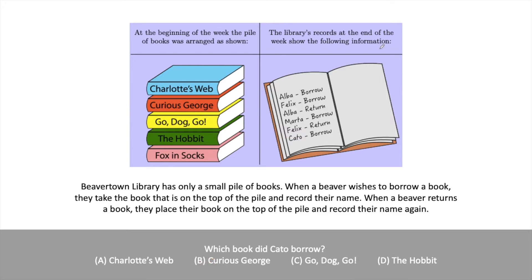There is a much faster way to solve this problem. If we go from the bottom to the top, we see that Cato was the last one to borrow a book. Cato borrows the book at the top of the stack — whichever was last returned. Felix just returned a book right before Cato borrows, so we don't care about what Alba and Marta did. We only care about what Felix did, because Felix has the book we care about. Felix borrows his book in the second entry in the list.